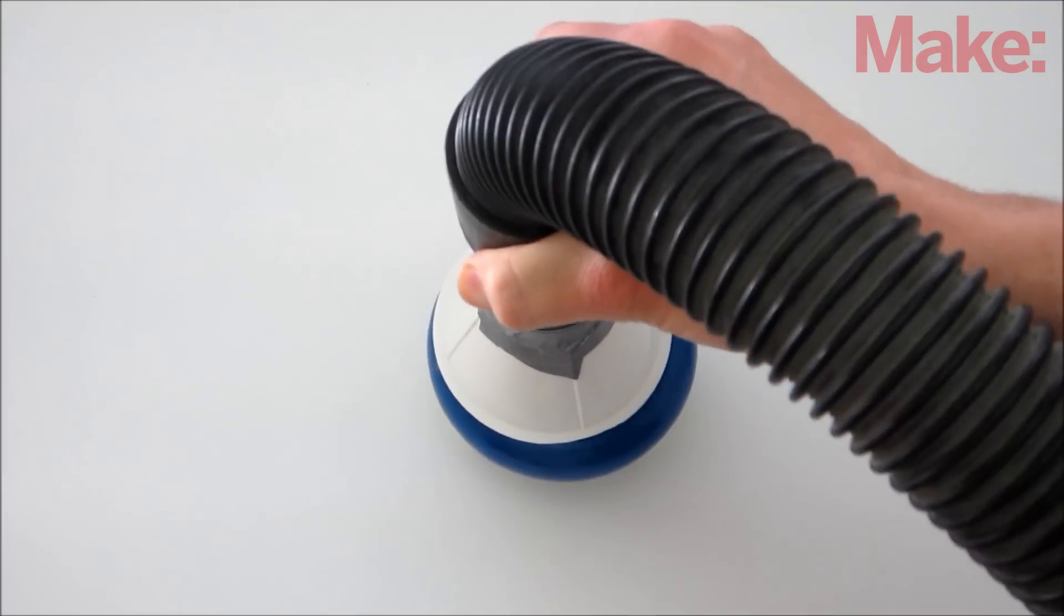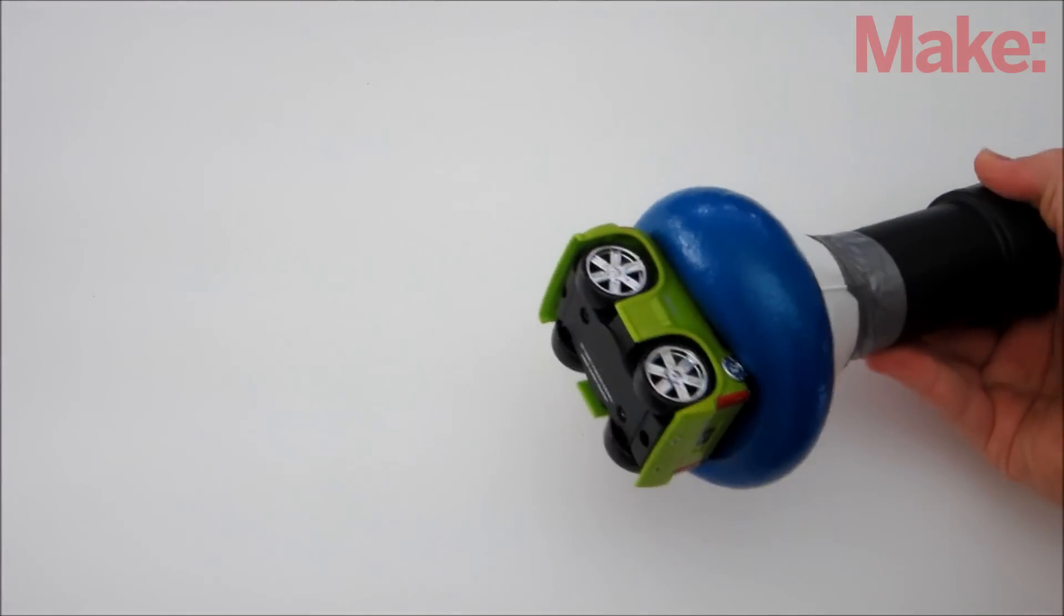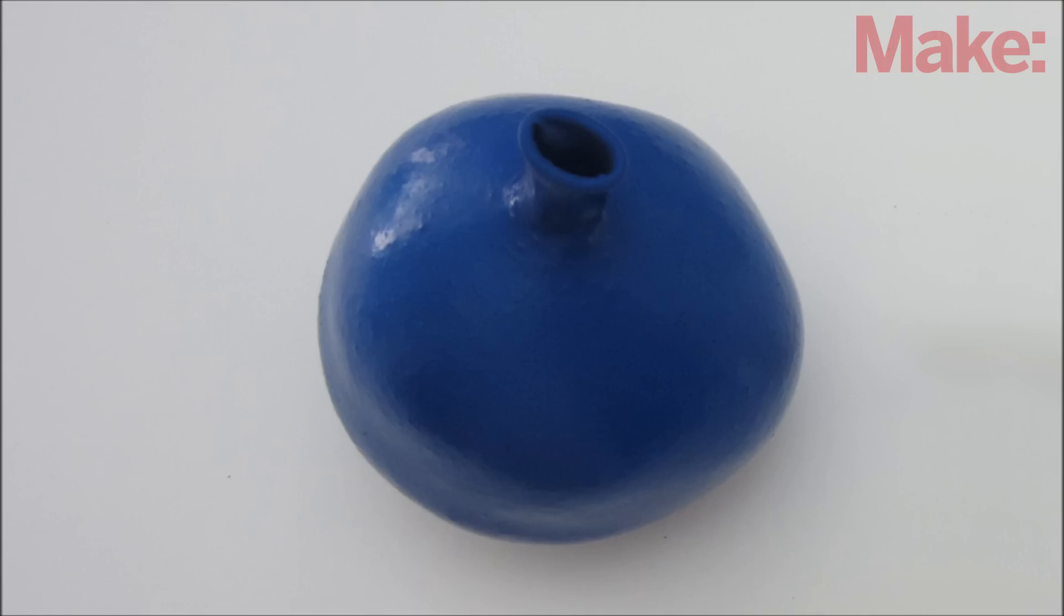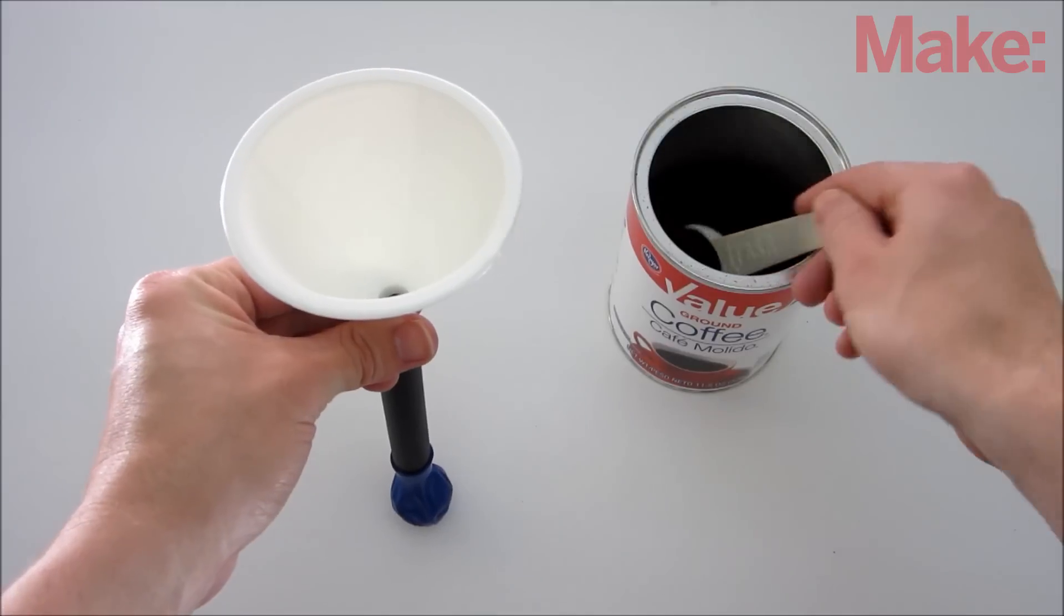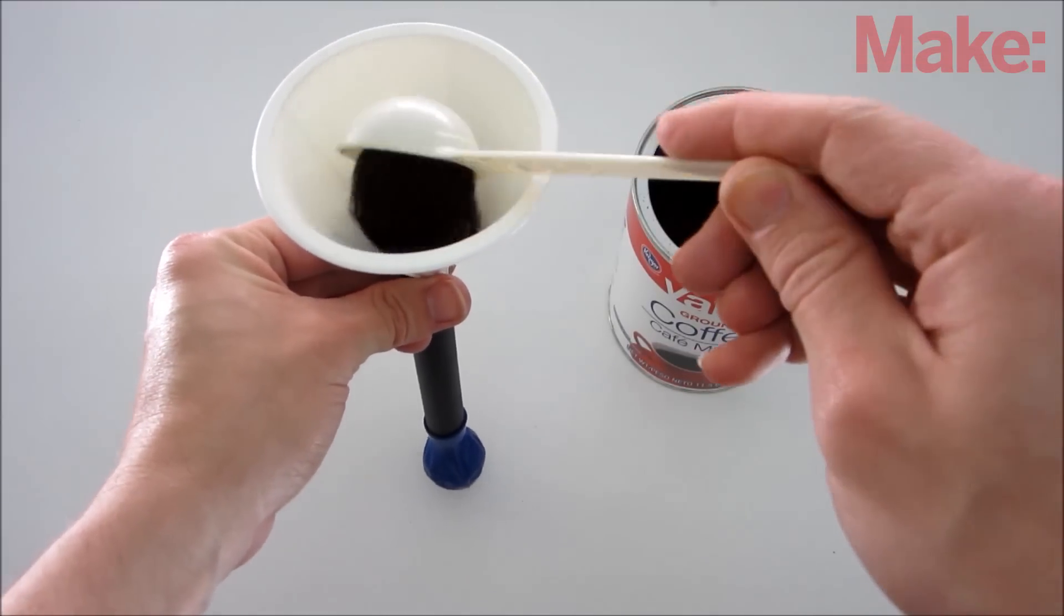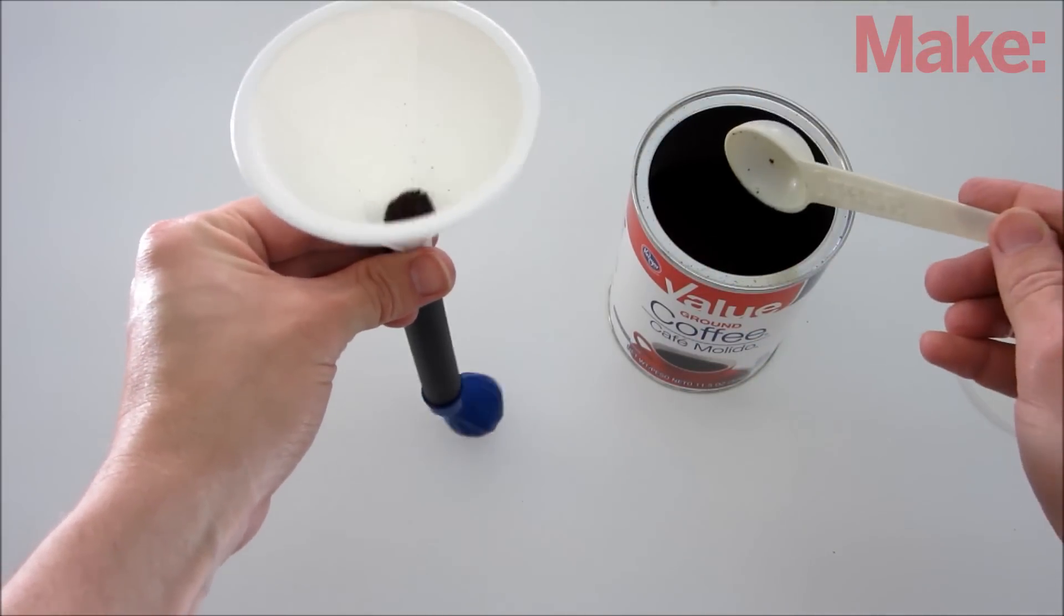This kind of gripper lets you pick up a wide variety of shapes. To build one, the first thing you need to do is fill the balloon with coffee. To do this, I attached the balloon to a small tube and poured coffee grounds into the other end with a funnel.